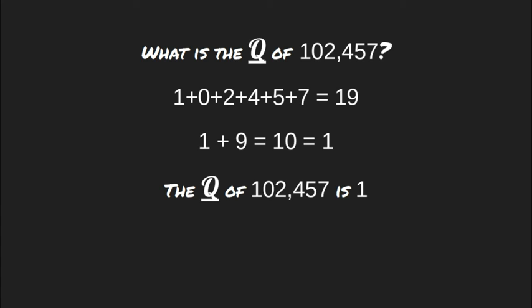One more time: what is the quality of 102,457? Regardless of how big the numbers are, when we use cross summation to find its quality, it will always go down to a single digit. 1 plus 0 is 1, plus 2 is 3, plus 4 is 7, plus 5 is 12, plus 7 is 19. 19: 1 plus 9 is 10. 10: 1 plus 0 is 1. So the quality of 102,457 is 1.